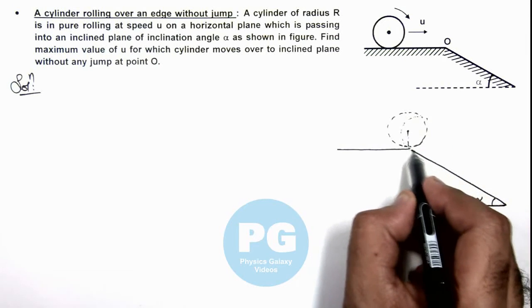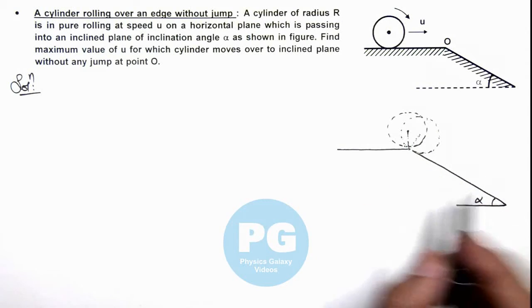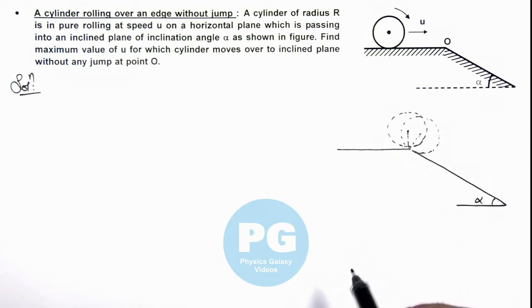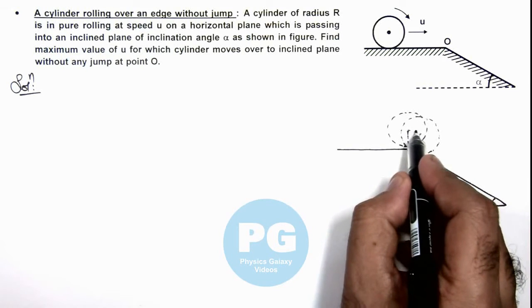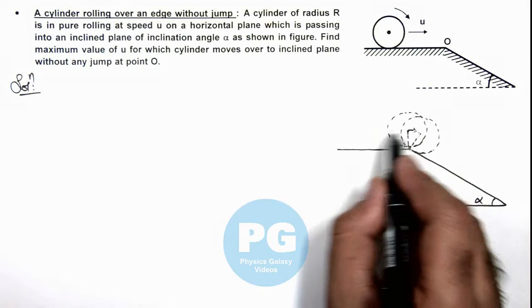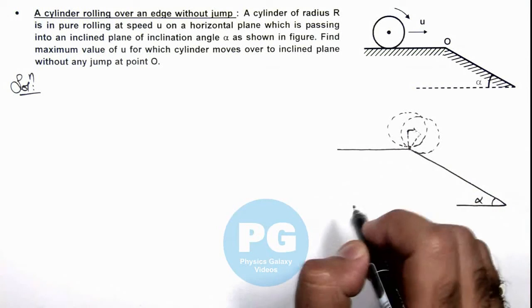Its position is like this, where the center of mass is at a perpendicular distance from point O, perpendicular to incline. So the center of mass has traveled in a circular arc when the cylinder transits from horizontal plane to inclined plane.